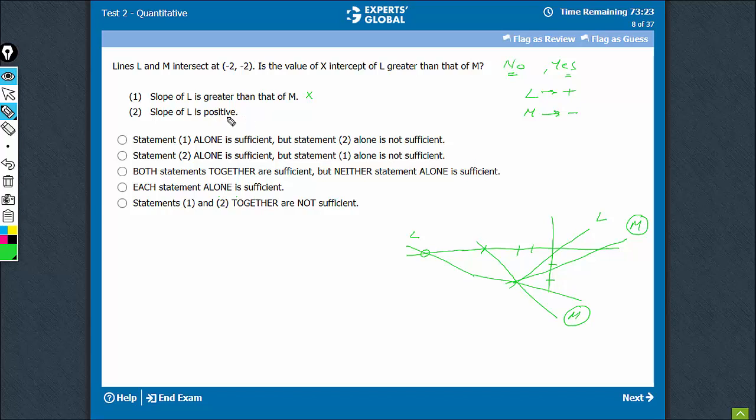Slope of L is positive. So we just saw a case where slope of L is positive, M is negative, the answer is yes. And the first case we took here, both of them have positive slopes.